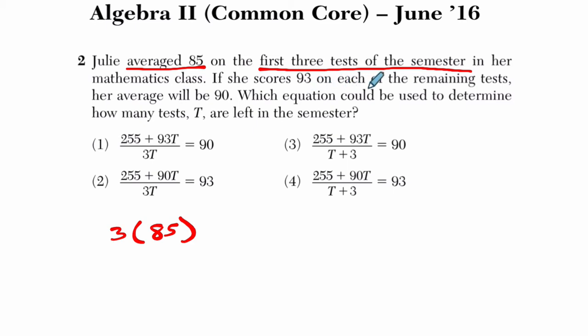If she scores 93 on each of the remaining tests, so on top of those tests, she's going to score 93 on some amount of them. I see they're using the variable t here, and I see t's in all the choices. So it's 93 times some amount of tests.